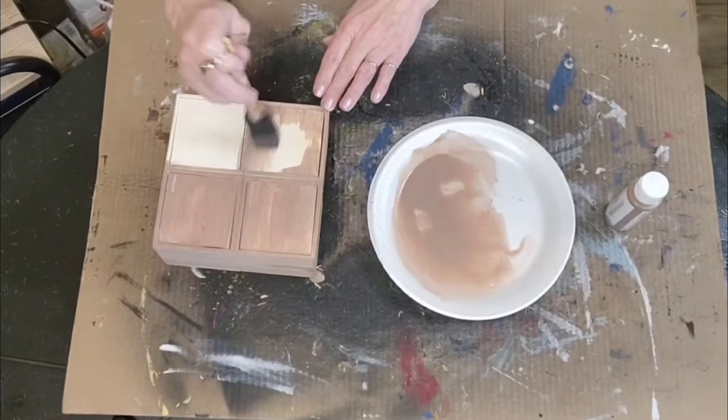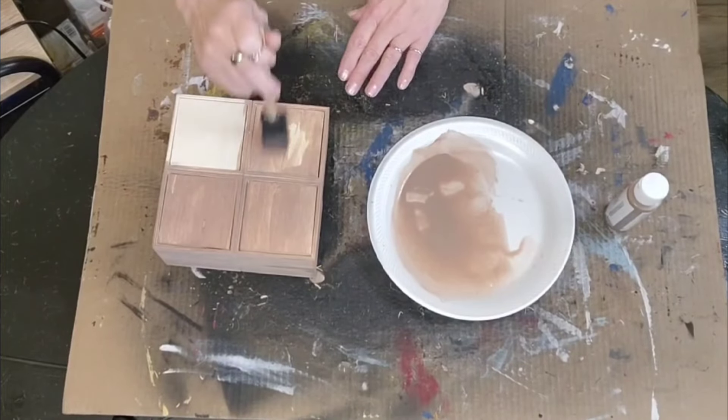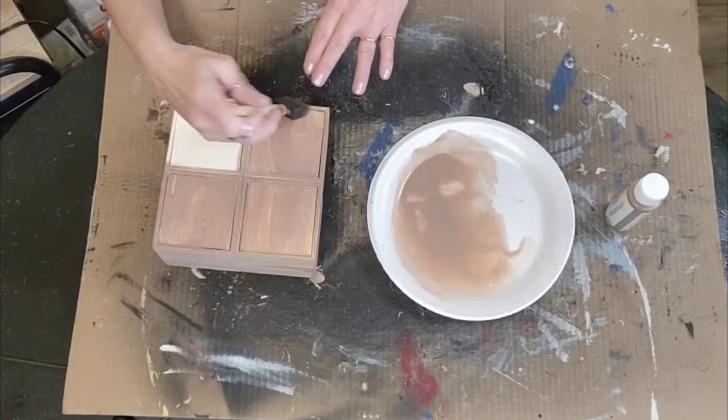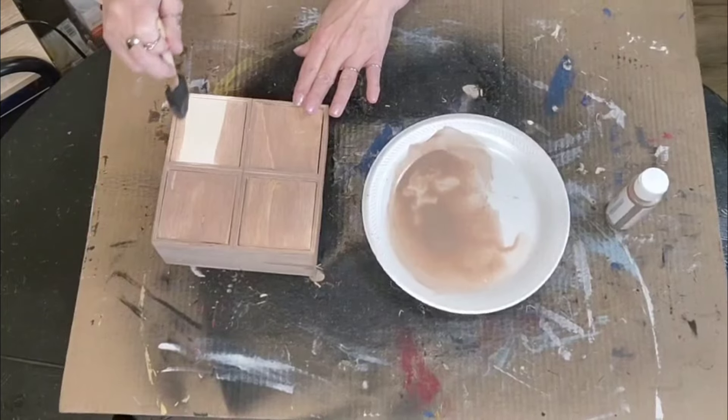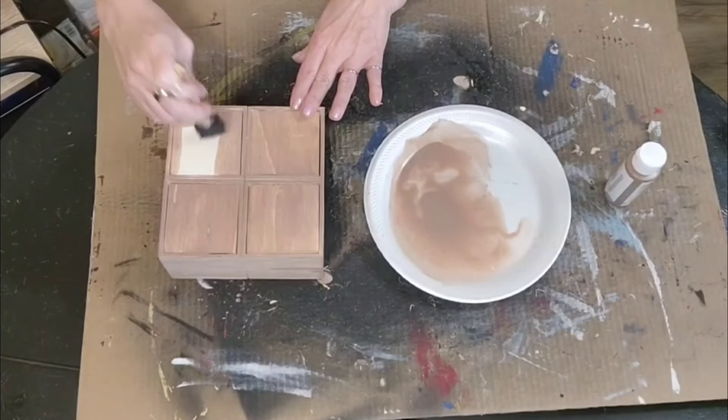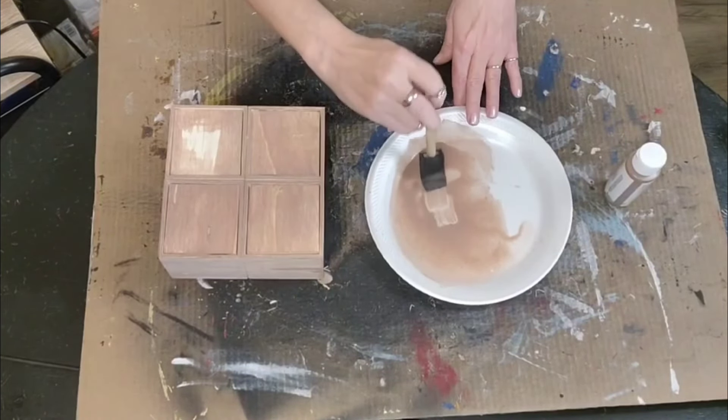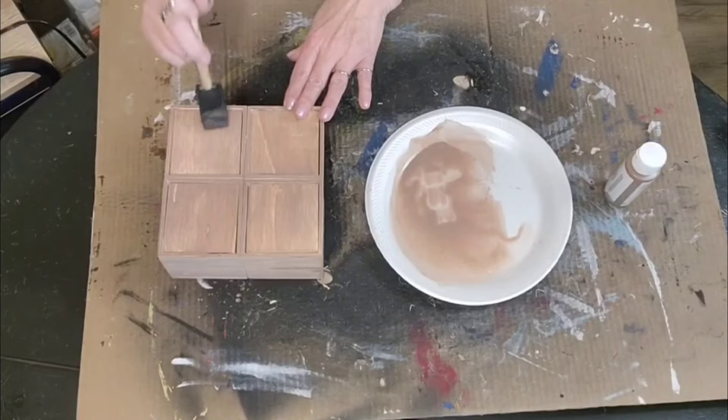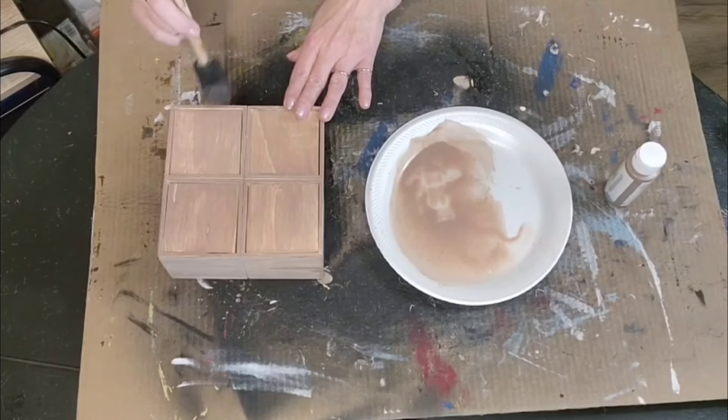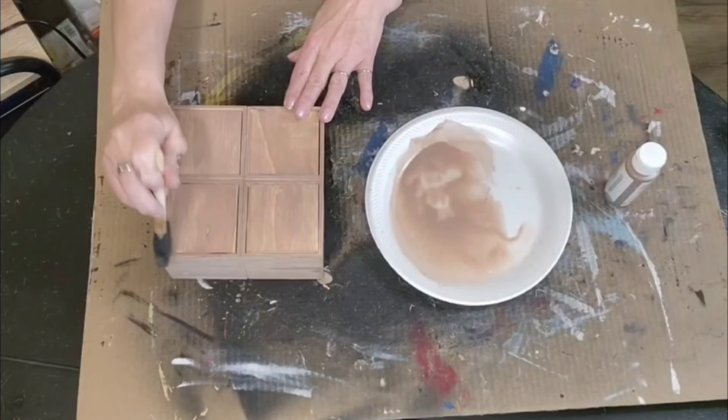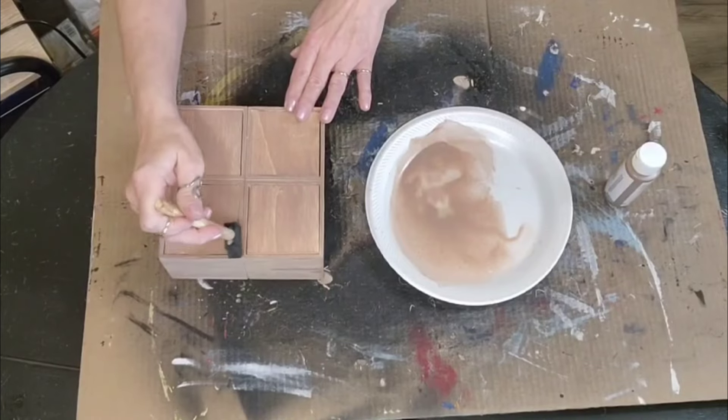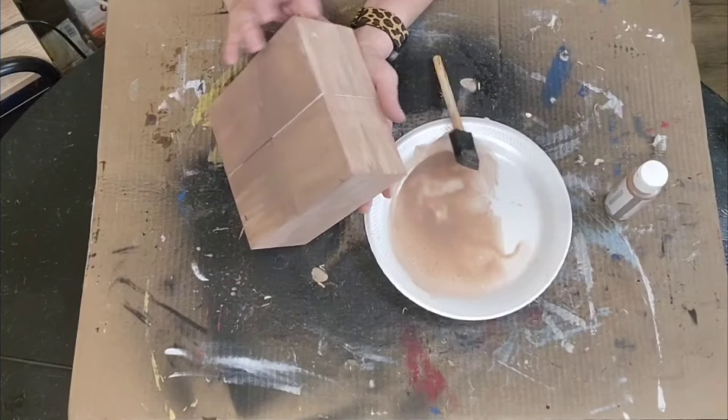I painted all four sides and the front of each one of these little drawers with the paint water mixture, and just kind of dabbed it on and sponged it on, but I got one really good coat over the entire little project. Then I pulled the drawers out.